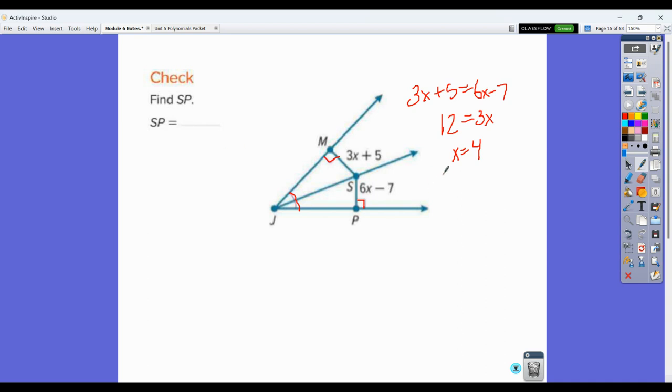And it asks how long SP is, so we do 6 times 4 minus 7, and 24 minus 7 is going to give us 17. So SP is equal to 17 in this example here.